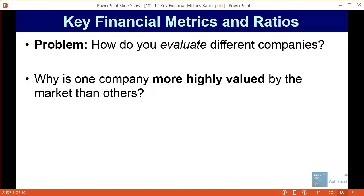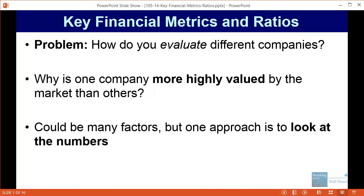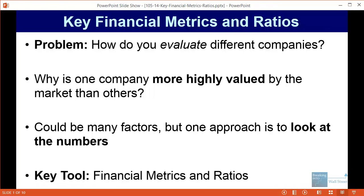There might be many reasons for this — qualitative factors, or one market segment that is hot at the moment attracting a lot of investor attention. But the purpose of this analysis is to look at the numbers and go back to the financial performance of these companies, both historically and going forward, and use that to figure out why the valuations might be different. The key tool we use for that is financial metrics and ratios.